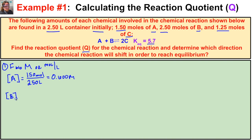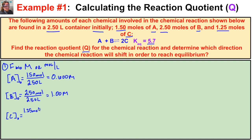The initial concentration of B is 2.50 moles divided by 2.50 liters, giving 1.00 M. The initial concentration of C is 1.25 moles divided by 2.50 liters, giving 0.500 M. So our initial concentrations are: [A] = 0.600 M, [B] = 1.00 M, and [C] = 0.500 M.